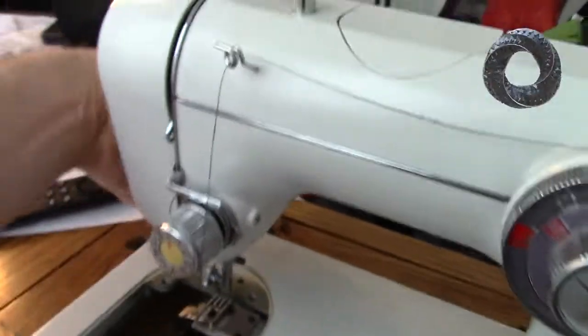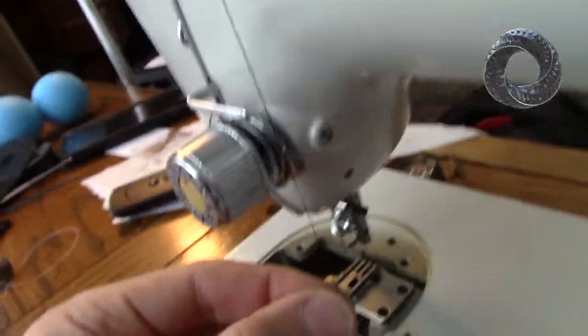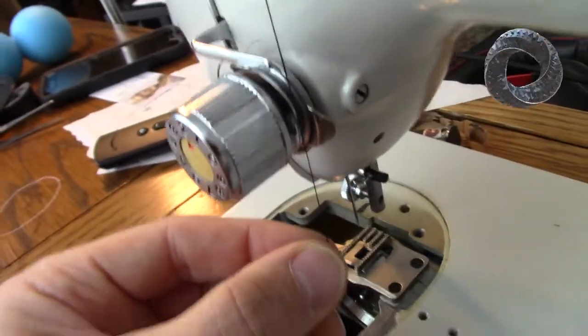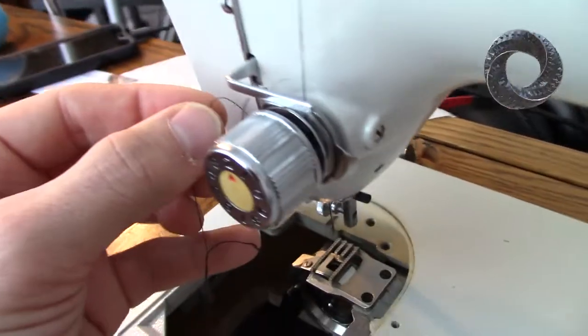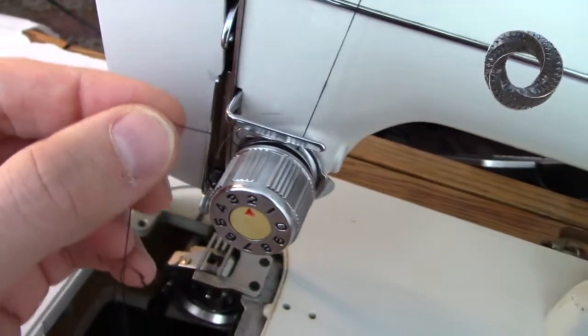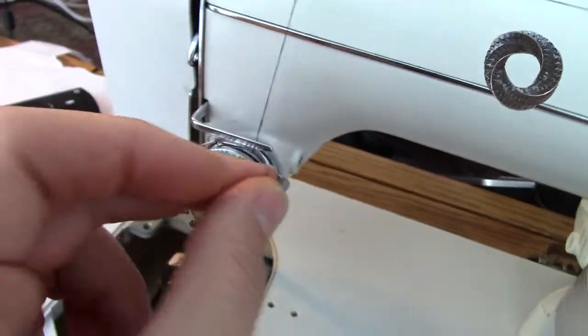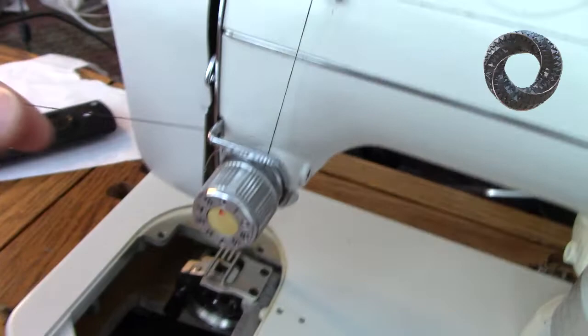Then we bring it down, make sure the foot is up, and then in there you'll see two discs. You've got to make sure the thread goes through the discs like that, and then bring it around under this tensioning spring, and then over the top.